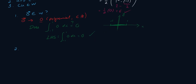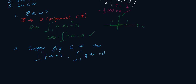Suppose f and g belong to W. As soon as you write that, state what it means in terms of the condition: the integral from minus 1 to 1 of f dx equals 0, and the integral from minus 1 to 1 of g dx equals 0.